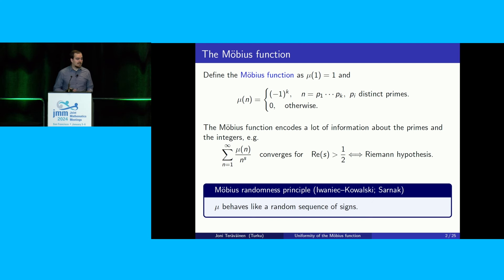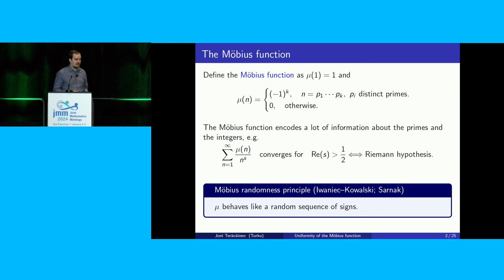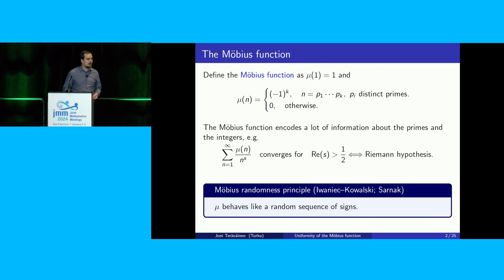One very fascinating thing about the Möbius function is what's called the Möbius randomness principle. This was introduced in a famous book of Iwaniec and Kowalski, and made more precise by Sarnak later. Roughly speaking, it says that the Möbius function should very much look like a random variable — a random sequence of plus one, minus one, and zero, with no obvious structure and no correlation with any structured object.